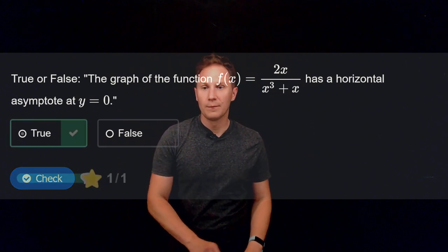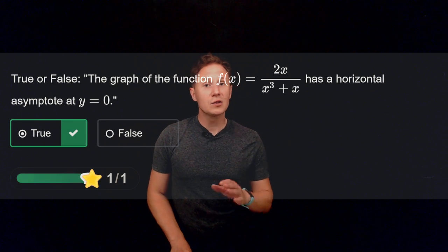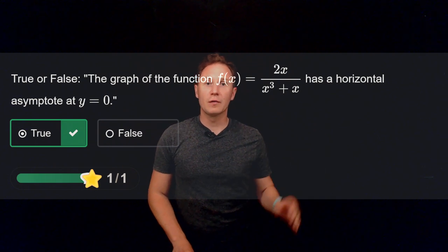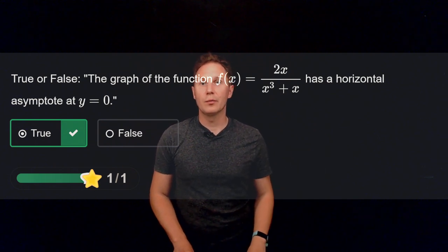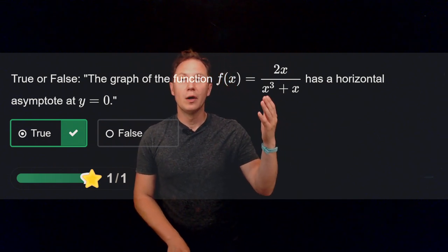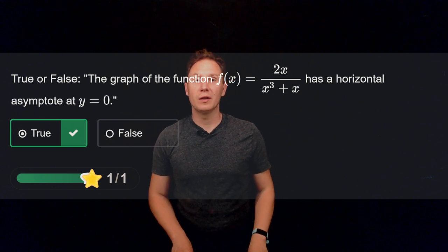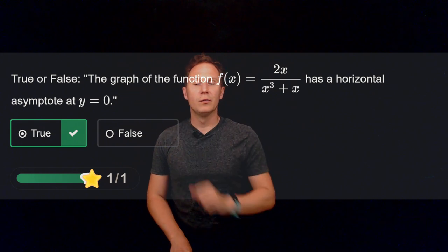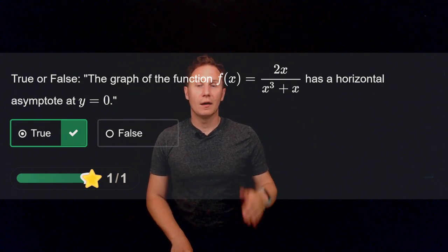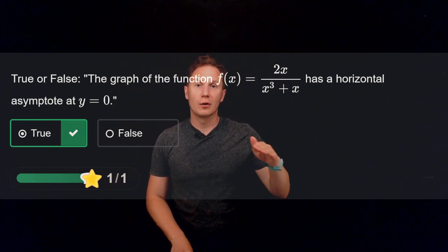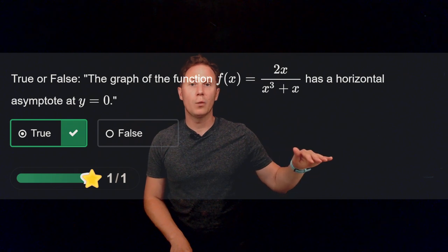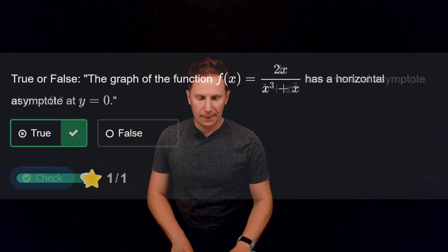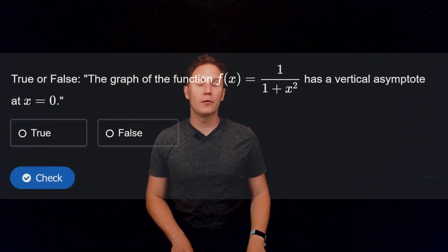Is it true or false that the function f(x) = 2x / (x³ + x) has a horizontal asymptote at y = 0? The answer is true. Taking x to approach positive infinity gives the limit 0, because of the dominating cubic term in the denominator. So the graph of the function does get closer and closer to the horizontal line at y = 0.